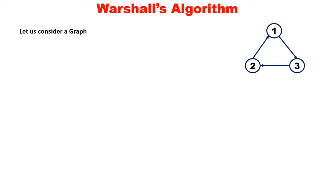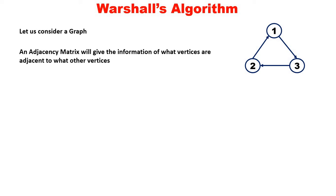Let us consider a graph. It is just a three-vertex graph. Vertices 1, 2, and 3 are the vertices and there are only three edges. An adjacency matrix will give the information of what vertices are adjacent to what other vertices — where the direct edges are, that information it will give. We will just find the adjacency matrix for this graph and you will understand it better.